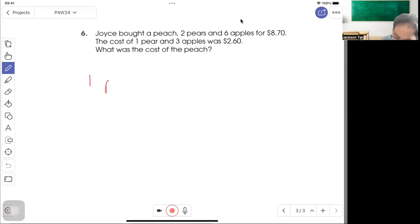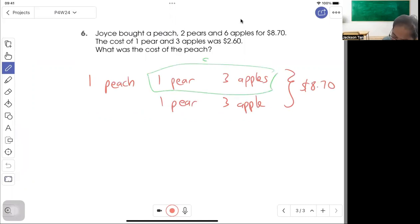So one peach, then there are 2 pears and there are 6 apples, which is 3 apples, 3 apples, all together $8.70. And you mentioned that 1 pear and 3 apples is $2.60. One pear, 3 apples is $2.60. So to find one peach, you just take $8.70 minus $2.60 minus $2.60, and you will get the answer.